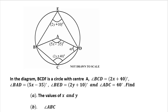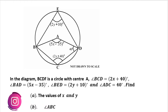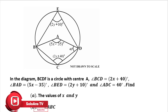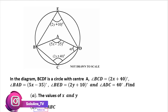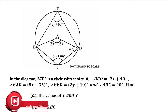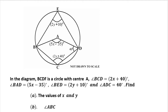Hello, today I want to consider question 4 of the West African Senior School Certificate Examination, that is the WASSCE 2022 General Mathematics paper. Question number 4. The question says: in a diagram, BCDF is a circle with center A, angle BCD is equal to 2X plus 40 degrees, angle BAD is equal to 5X minus 35 degrees, angle BED is equal to 2Y plus 10 degrees, and angle ADC is equal to 40 degrees. Find: A, the values of X and Y; B, angle ABC.